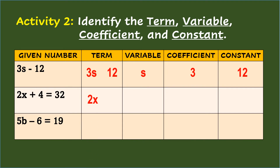Number 2: 2x plus 4 equals 32. The terms are 2x and 4. The variable is the letter x. The coefficient is 2. And the constant is 4. Number 3: 5b minus 6 equals 19. The terms are 5b and 6. The variable is the letter b. The coefficient is 5. And the constant is 6.